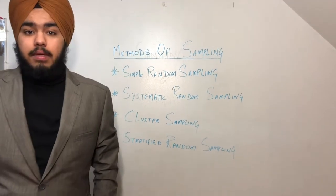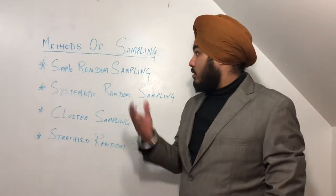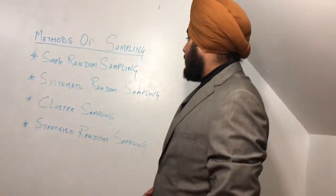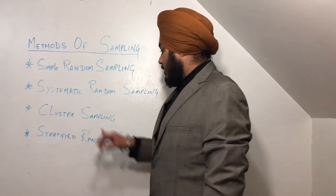The types of sampling. Basically there are four different methods of sampling: the first one is simple random sampling, the second one is systematic random sampling, the third one is cluster sampling, and the fourth is stratified random sampling.